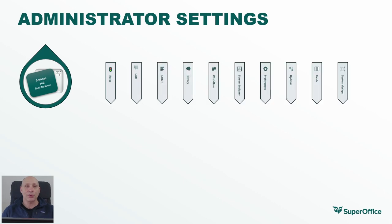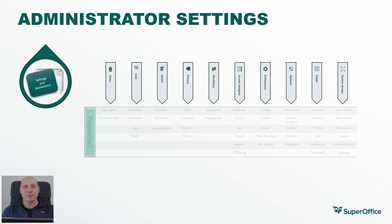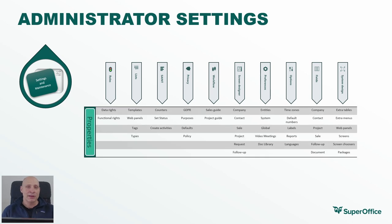Under Roles, administrators can assign user rights and functional rights, which enable behaviors for specific users — such as the ability to view dashboards, manage support cases, and administrate list items. The Lists section is where different types of lists are defined and managed.